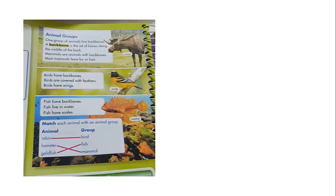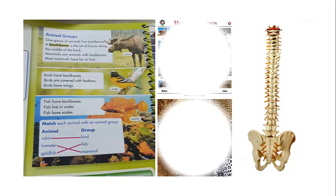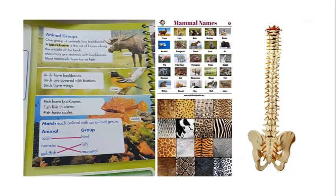Let's start reading: one group of animals has backbones. So animals are also divided into many groups, and one of the main groups contains animals that have backbones. Different kinds of animals which have a backbone can all be put in one group. A backbone, as we studied, is a bone that's exactly in the middle of our back — a set of bones along the middle of the back.